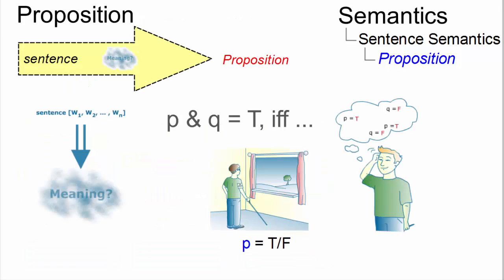In summary, a proposition is a central concept in sentence semantics, and it denotes a potential fact about the world, which can be true or false.